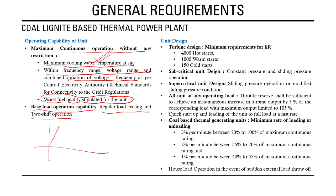The unit should have base load operation capability, with regular load cycling and two-shift operation possible — meaning the plant can operate for 12 hours, stop, restart, and run again. Regular load cycling with the unit ramping up and down is also required.